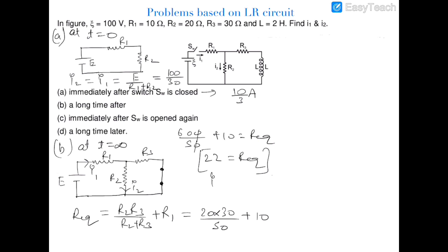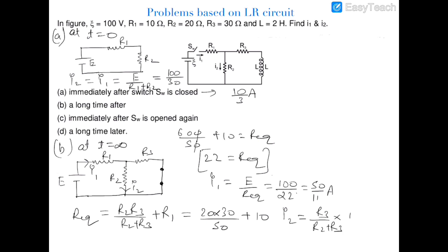The current i1 = E/R_eq = 100/22 = 50/11 ampere. To find i2, we apply the current divider rule: i2 = R3/(R2+R3) × i1 = 30/50 × 50/11 = 30/11 ampere.